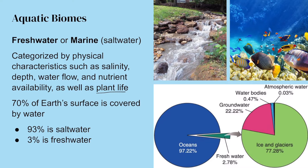70% of Earth's surface is covered by water. 93% of that is saltwater, and only 3% of that is freshwater. Less than 1% of that freshwater is actually accessible to humans for consumption — most of it is locked away in glaciers. Looking at this diagram, ice and glaciers make up the largest portion, then we have groundwater which humans can pump out, and then bodies of water and atmospheric water.